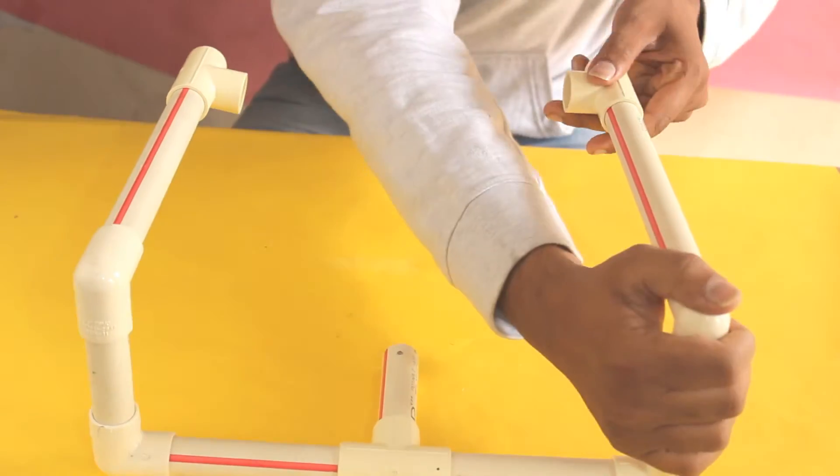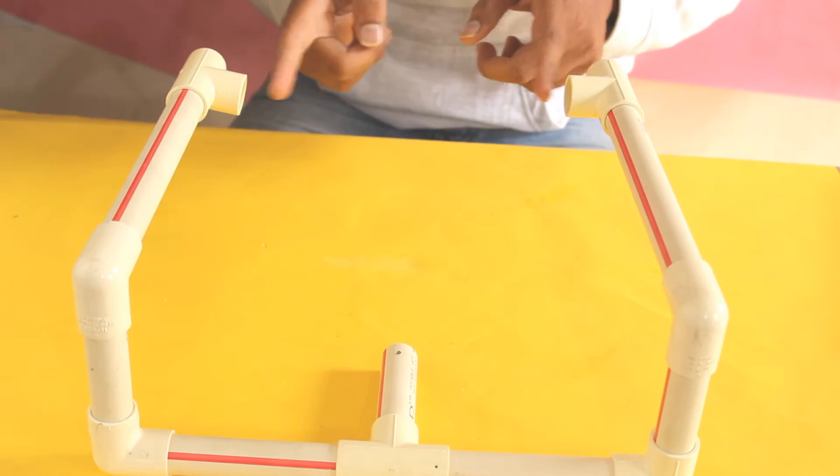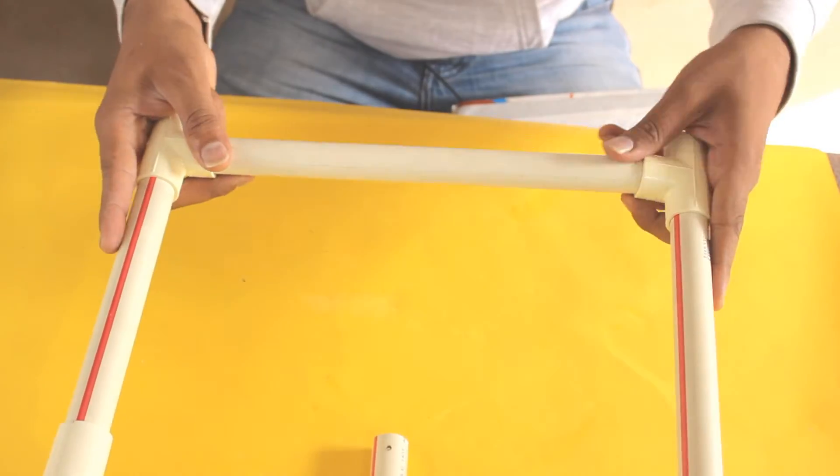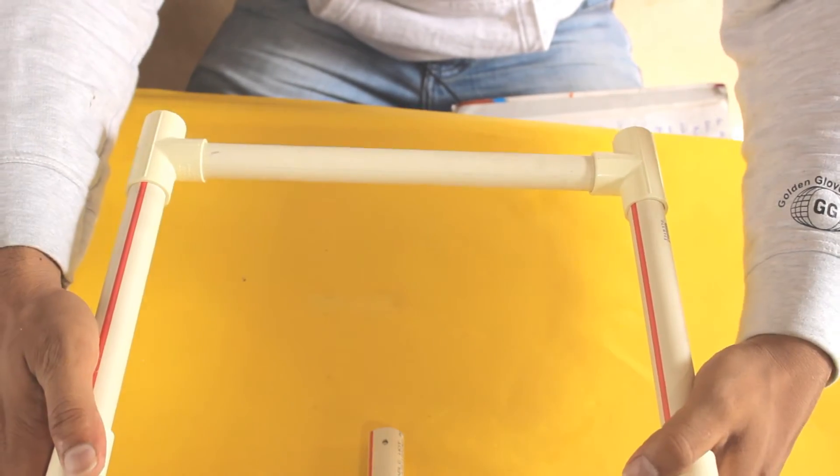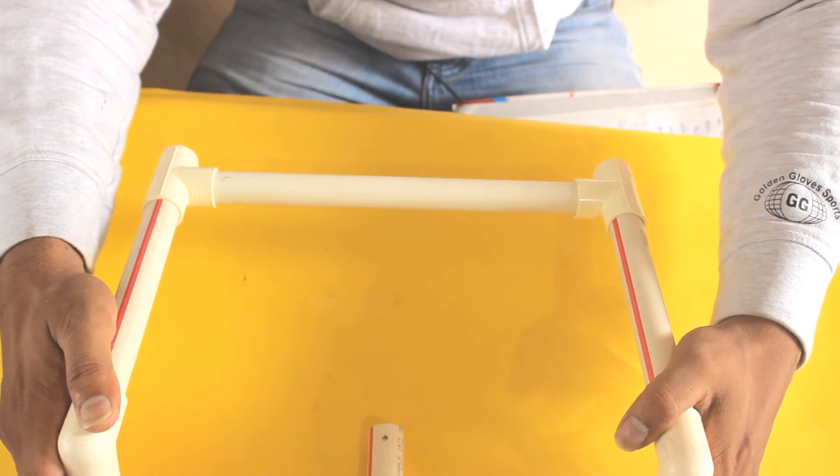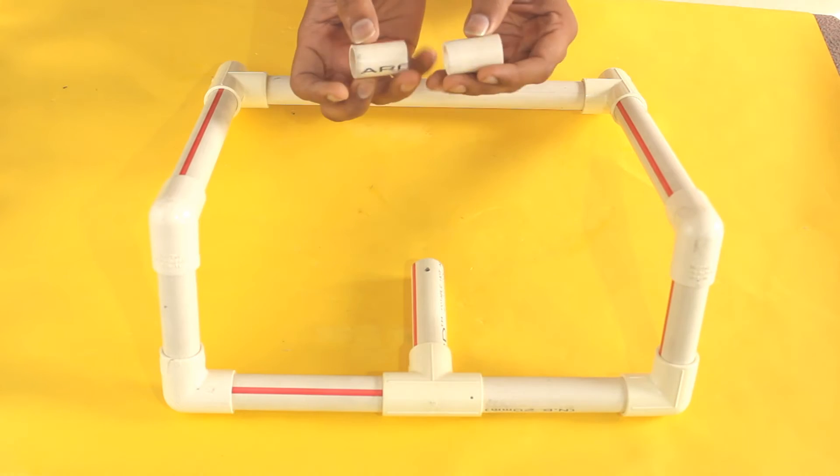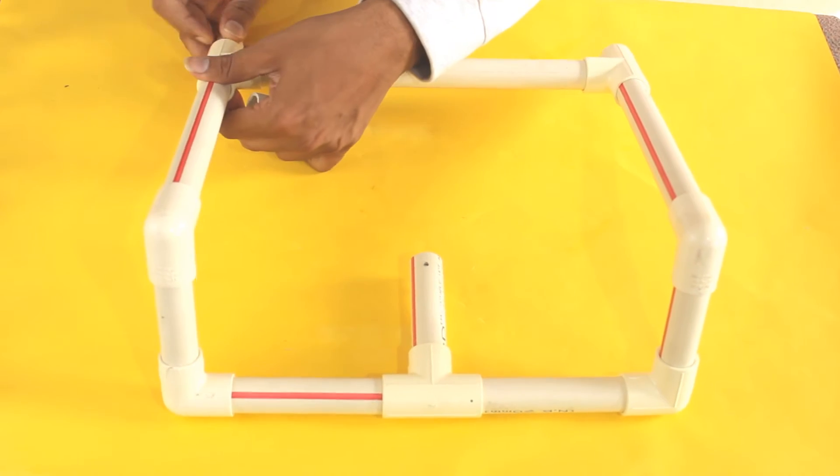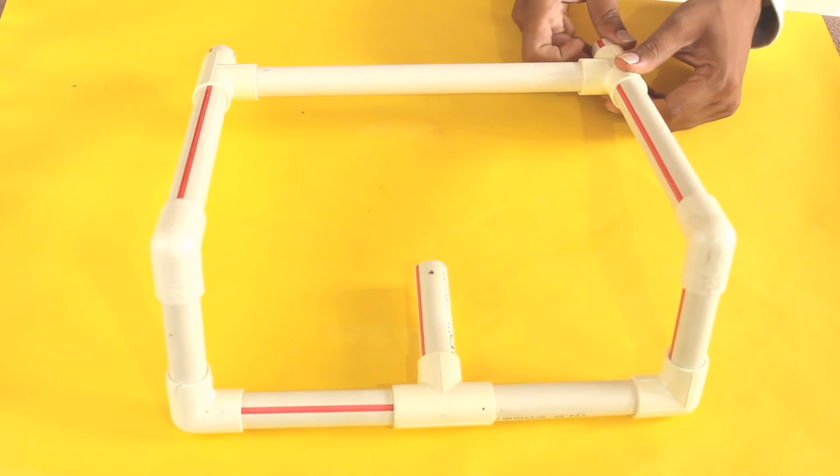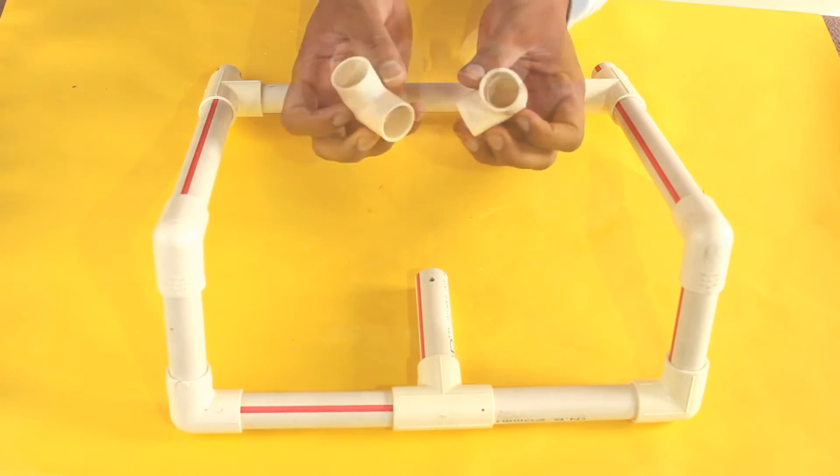And here, add the 11 inch portion of the PVC pipe. Slightly bend this portion. To this, attach 1.5 inch portions of the PVC pipe, and to this, attach elbows.